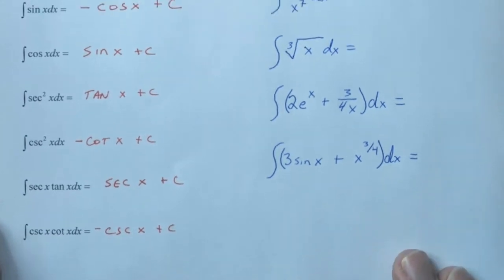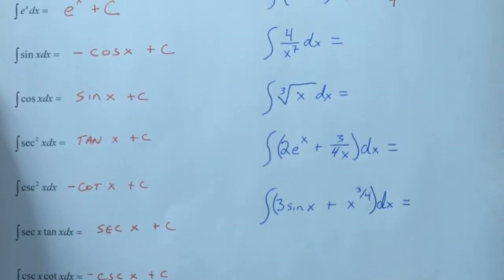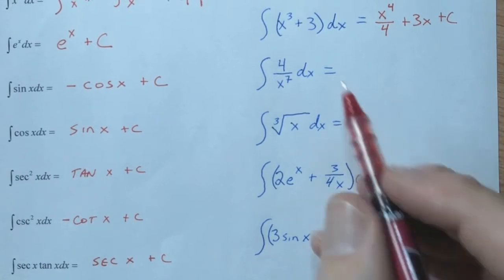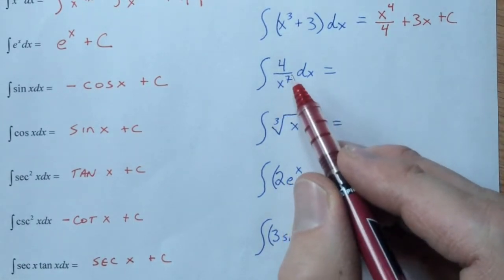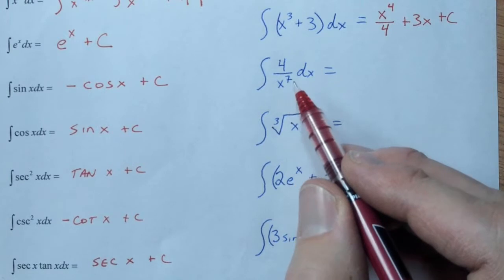All right, so we've got those seven antiderivatives to memorize, but let's put them all into action here. If we look at this next example, we have 4 over x to the 7th.